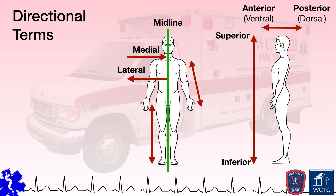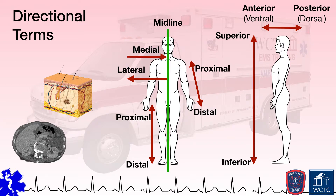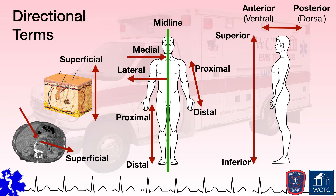When dealing with the extremities, features further away from the body's core are distal to those that are closer, while features closer to the body's core are proximal to those that are further away — those that are closer to the hands or feet. We also need to recognize movement in and out of the body, from the surface of the skin into the core. Anything closer to the exterior surface of the skin is superficial to features closer to the core, while those closer to the core are considered deep to those closer to the exterior of the skin.